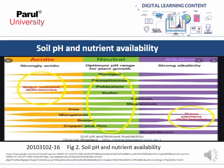Summary of soil pH and nutrient availability: In strongly acidic soils, there is major nutrient deficiency — micronutrients are more available but major nutrients like nitrogen, phosphorus, and potassium are not. At neutral or optimum pH range for plant growth, nitrogen, phosphorus, potassium, and sulfur are all more available. Iron, manganese, boron, copper, and zinc are more available at slightly acidic soil pH.